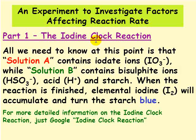All we really need to know at this point is that there is a solution A that contains iodate ions, IO3-, and solution B contains bisulfite ions and acid and starch.